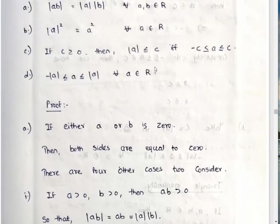For the third statement: if C is positive, mod A less than C if and only if minus C less than A less than C.